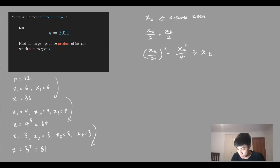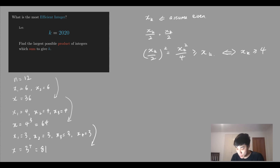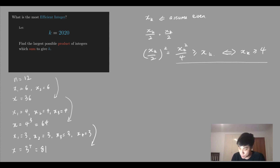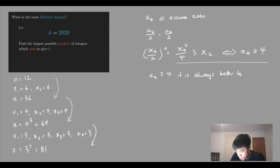Dividing both sides and multiplying across, we find this implies xk must be greater than or equal to 4. So for any even xk ≥ 4, it is always more efficient to divide that number into two halves and multiply those together than to use the original number. It is always better to use (xk/2) squared.